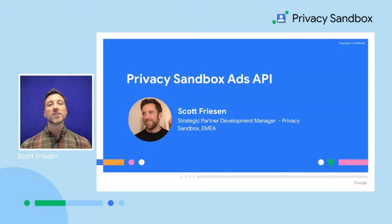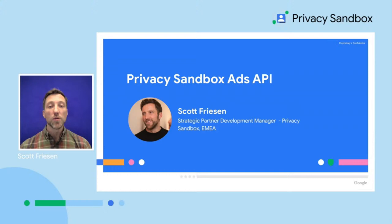By now, you should know that the Privacy Sandbox initiative is focused on keeping people's activity private across an open and free internet. Publishers rely on ads to keep content as free and broadly available as possible, and advertisers help people discover new products and offers that they may want. We ship new features in Chrome that enable websites to show people useful ads based on their activity with different parties without revealing the user's identity to those parties.